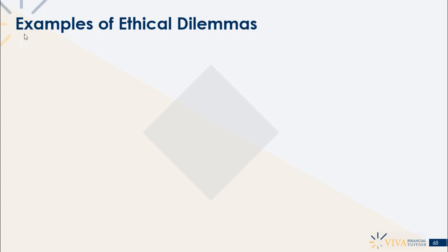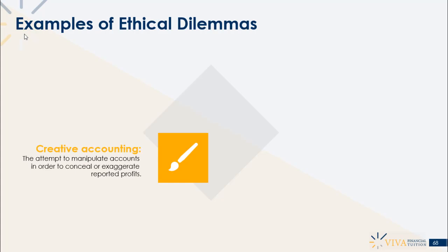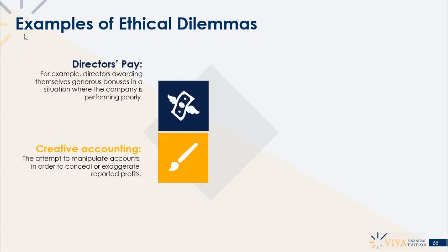Let's look at some examples of ethical dilemmas that might arise in organizations. Creative accounting — the attempt to manipulate accounts in order to conceal or exaggerate reported profits or losses. There can be pressure from senior management to present financial results in the most favorable light, which may compromise your integrity as a CIMA professional. Directors' pay is another example: directors awarding themselves generous bonuses in a situation where the company is performing poorly can be viewed as an unethical practice.